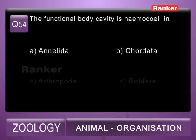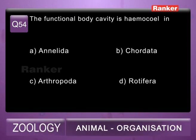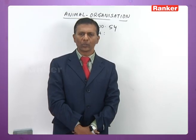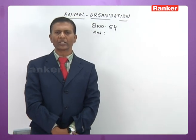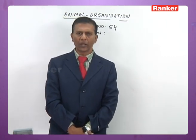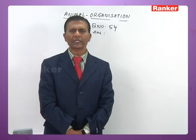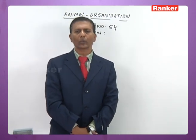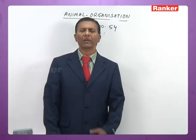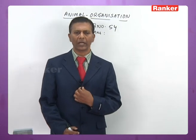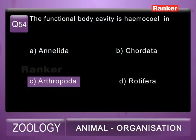Question 54: the functional body cavity is hemocele in A) Annelida, B) Chordata, C) Arthropoda, D) Rotifera. Annelida are true schizocoelomates without any modification. Chordates are enterocoelomates. Rotifera are pseudocoelomates. In Arthropoda, the schizocoel is present but is modified into hemocele. So the 54th question correct answer is C, Arthropoda.